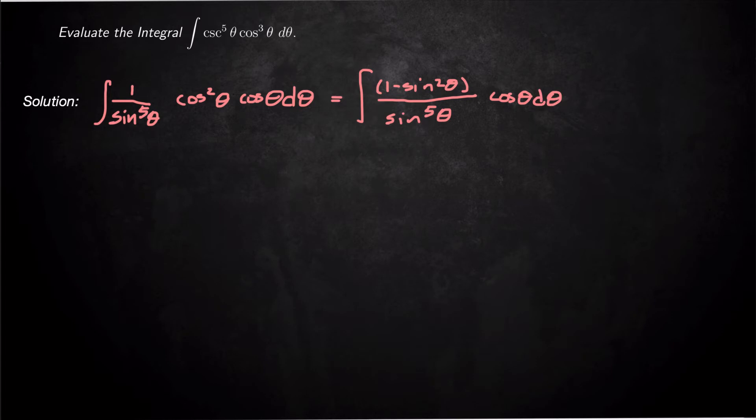And here we do a substitution. I'm going to let w equal sine theta. And then dw will be cosine theta d theta. So I've set myself up for a substitution here. Here's my dw.